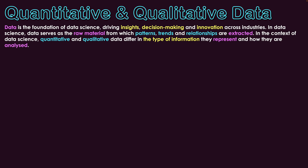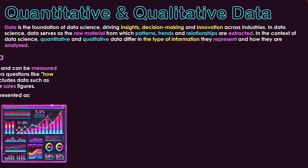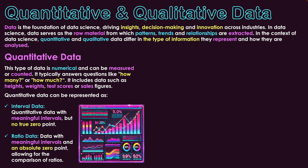What is the distinction between quantitative and qualitative data? We'll start with quantitative data. This is the type of data that is numerical and can be measured or counted. Because we have numerical values, we can make comparisons between different values, which supports our analysis. It typically answers questions like how many or how much, and includes data such as heights, weights, test scores and sales figures.